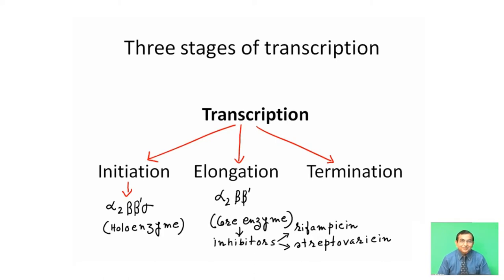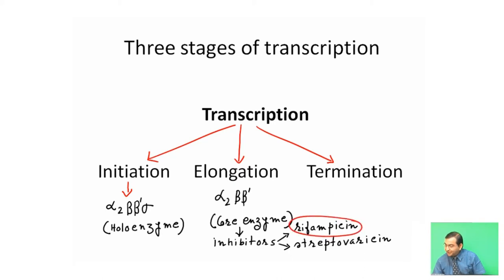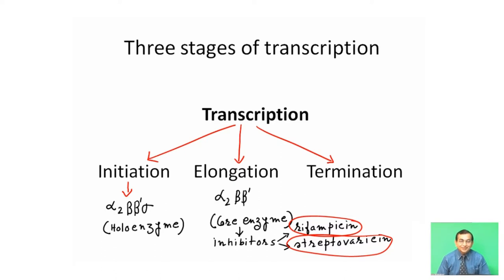Some antibiotics, such as rifampicin and streptovaricin, prevent the elongation process. They bind with the beta and beta prime subunit, stop the elongation process, and subsequently transcription. The final stage is termination.